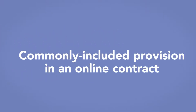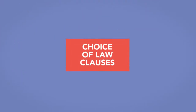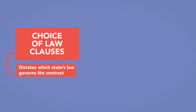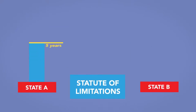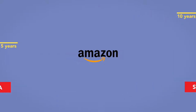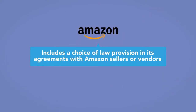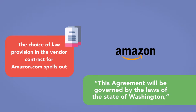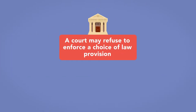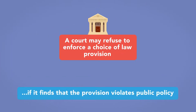A second commonly included provision in an online contract is a choice of law provision, which dictates which state's law governs the contract. An online company might include this to resolve disputes under the laws of a state most beneficial to it. For example, the statute of limitations may be shorter in one state and longer in another. Amazon includes a choice of law provision in its agreements with Amazon sellers or vendors, specifying that the agreement will be governed by the laws of the state of Washington, the state where Amazon is based. A court may refuse to enforce a choice of law provision if it finds the provision violates public policy.